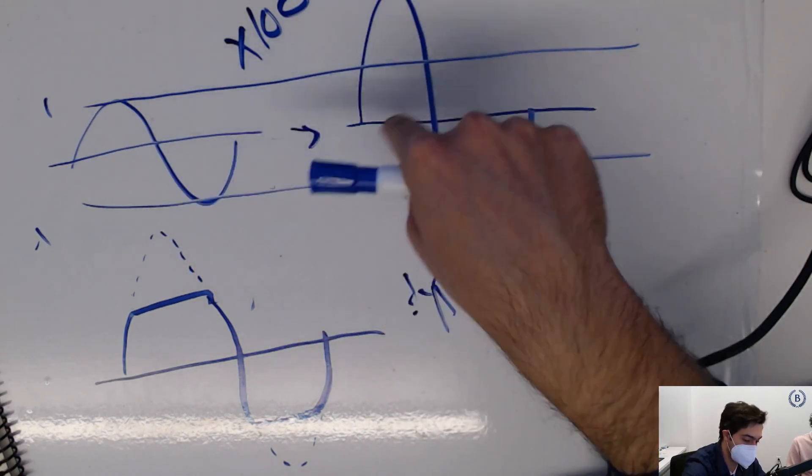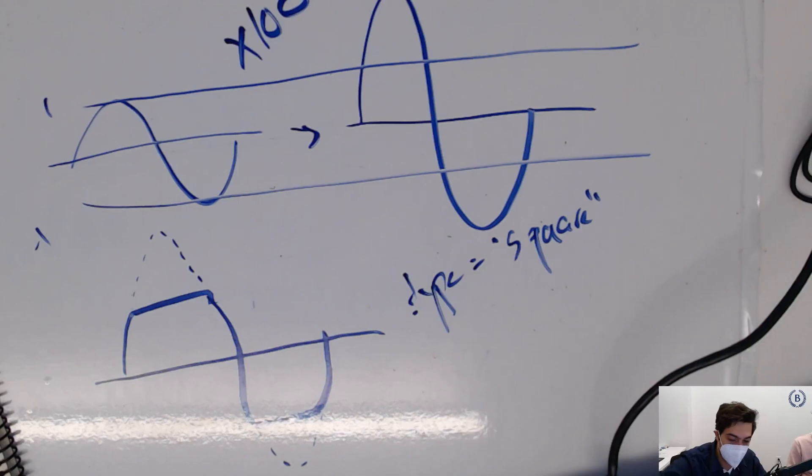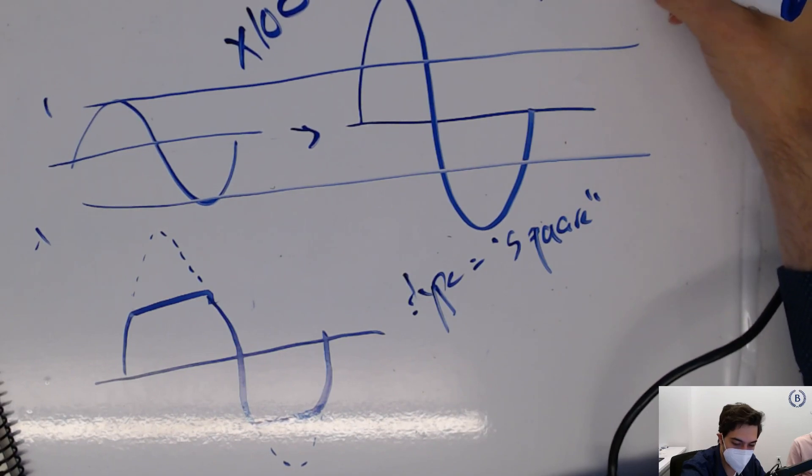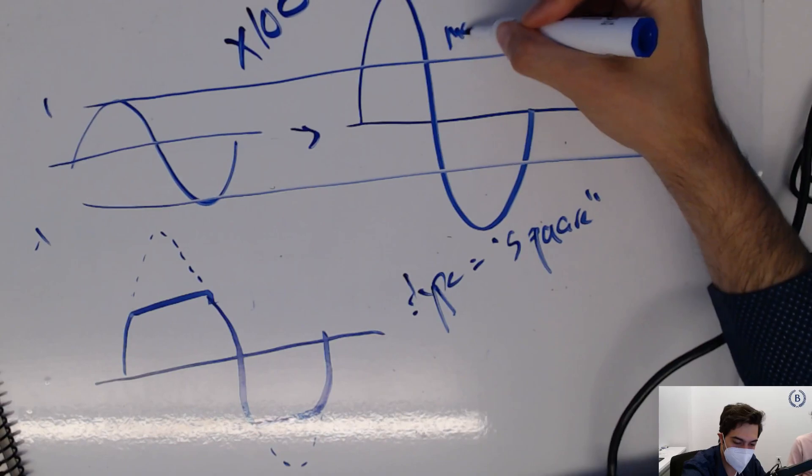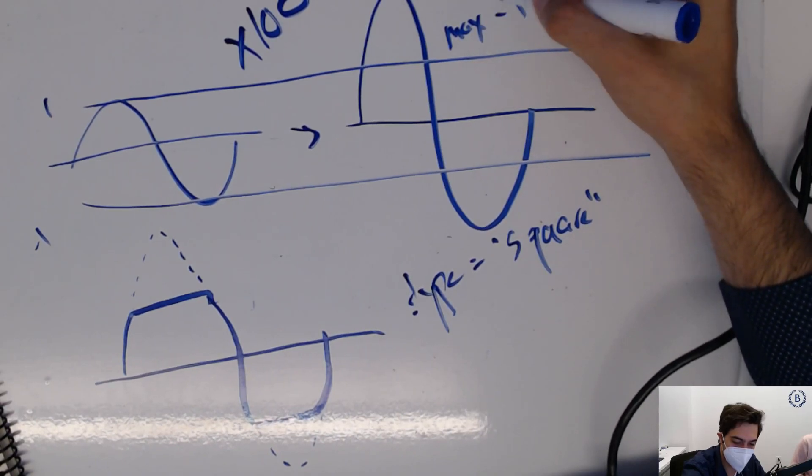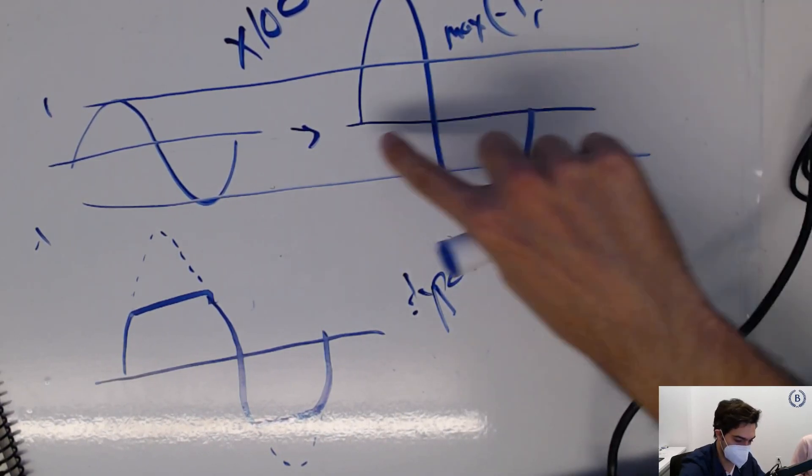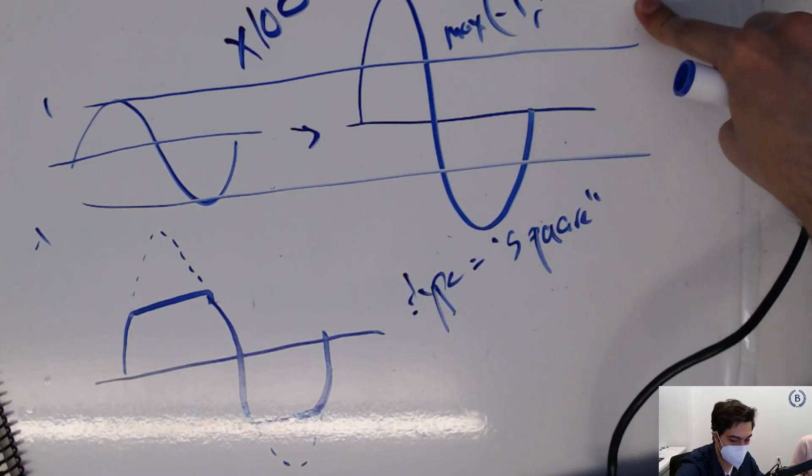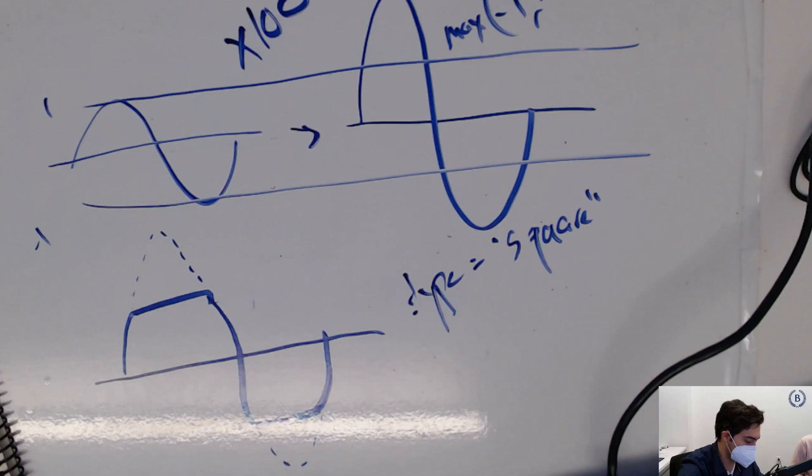And say, well, what would we do? We would say I want the min of one and the signal, and the max of negative one and that. And you just run this thing through an audio processor that does this. But again, not necessary for us.